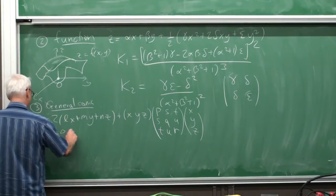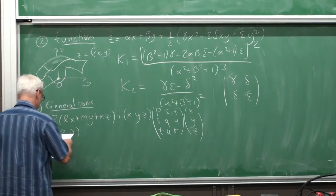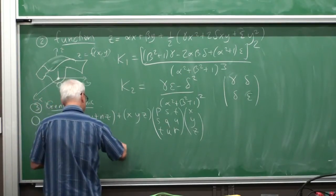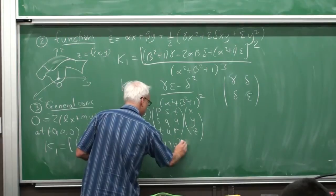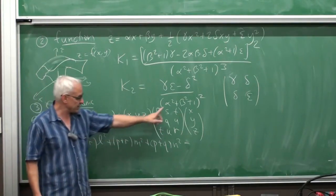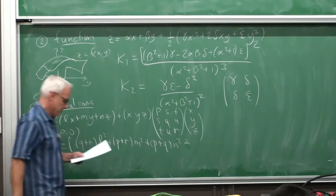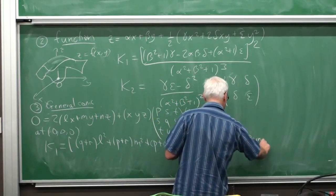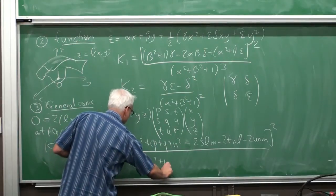At the origin, the first curvature has a pleasant symmetry. It's: (Q+R)L² + (P+R)M² + (P+Q)N², minus 2SLM, minus 2TNL, minus 2UNM, all of that squared, over (L² + M² + N²)³. It depends on all nine quantities — the three from the tangent plane and the six from the Hessian — relatively simple considering that.